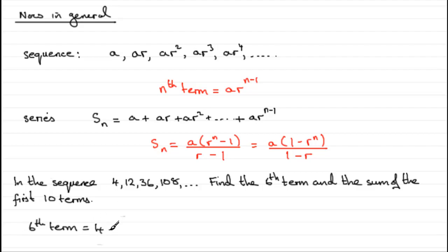Times the common ratio, which is 3, we're multiplying by 3, to the power n minus 1. We're looking for the sixth term, so n is 6, so 6 take away 1 is 5. And if you work this out on your calculator, you'll find you'll get 972.